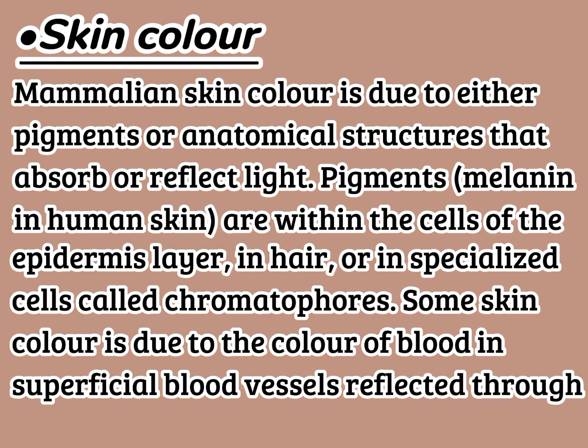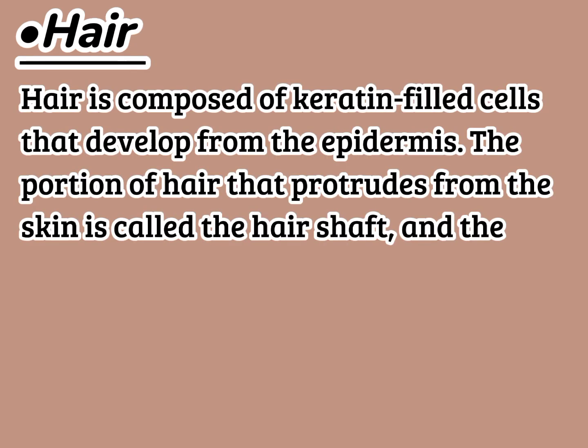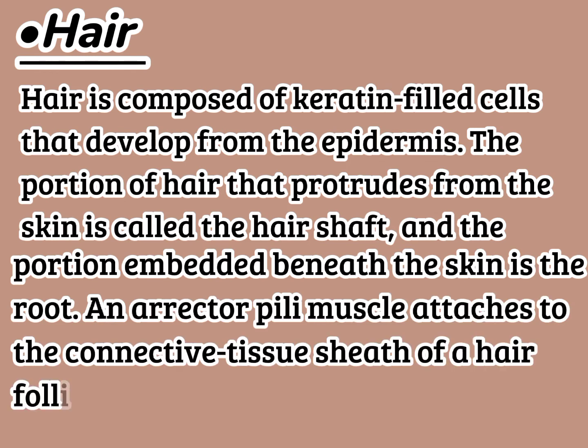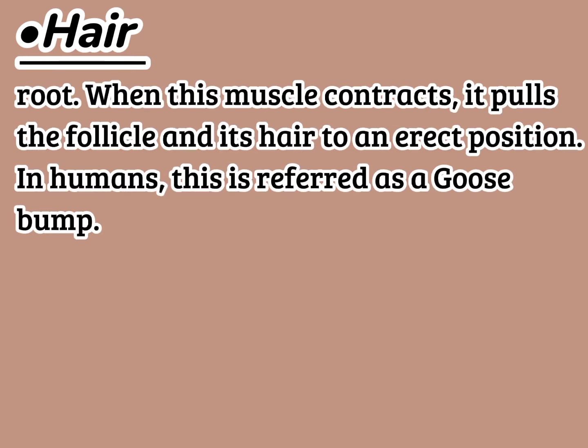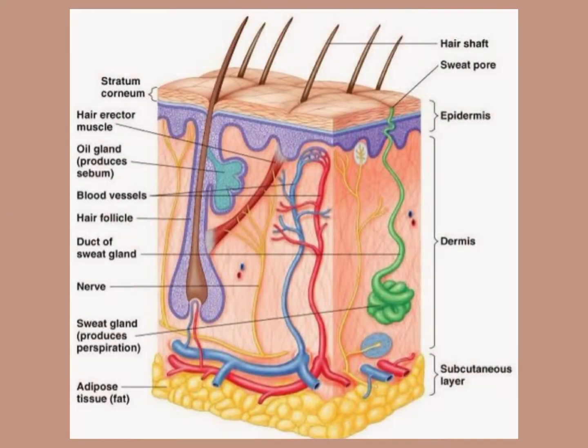Hair is composed of keratin-filled cells that develop from the epidermis. The portion of hair that protrudes from the skin is called the hair shaft, and the portion embedded beneath the skin is the root. An erector pili muscle attaches to the connective tissue sheath of a hair follicle surrounding the bulb of the hair root. When this muscle contracts, it pulls the follicle and its hair to an erect position; in humans this is referred to as a goose bump.